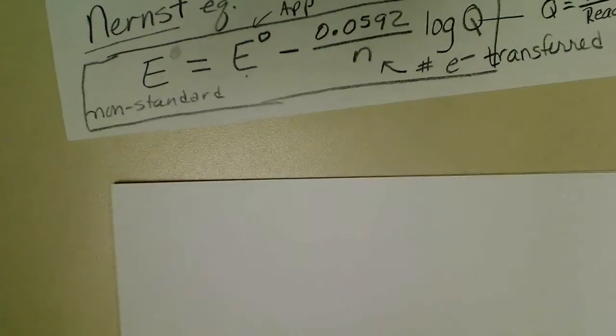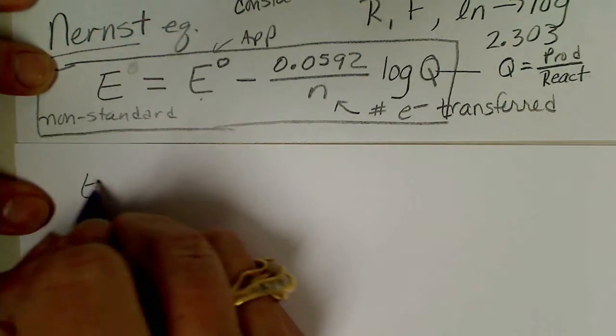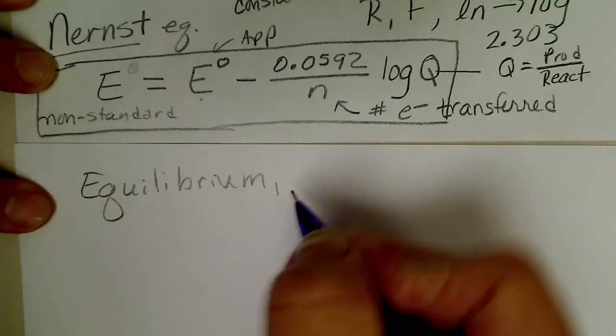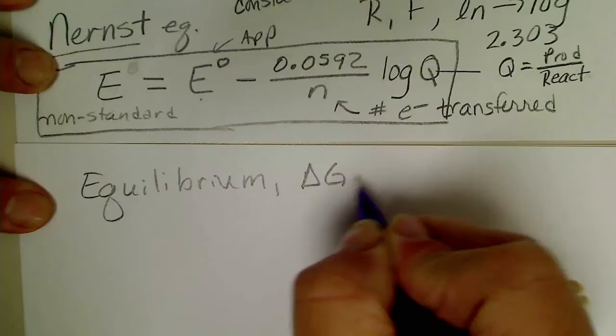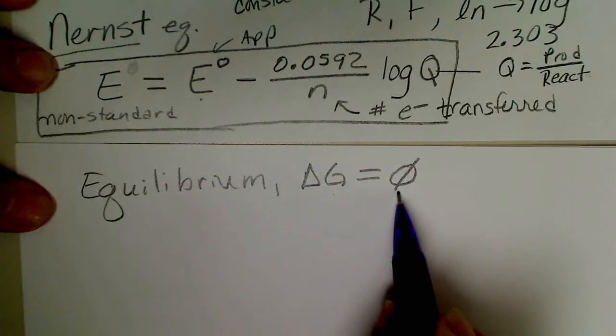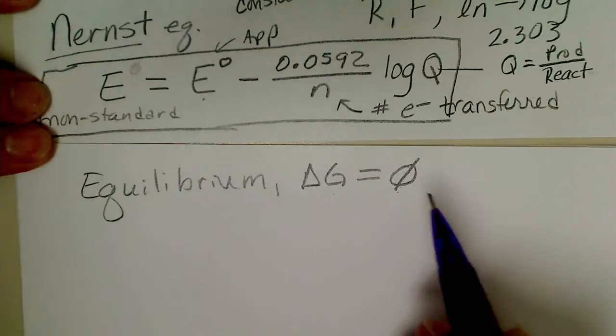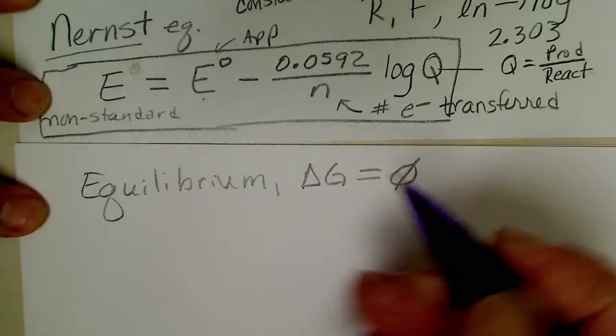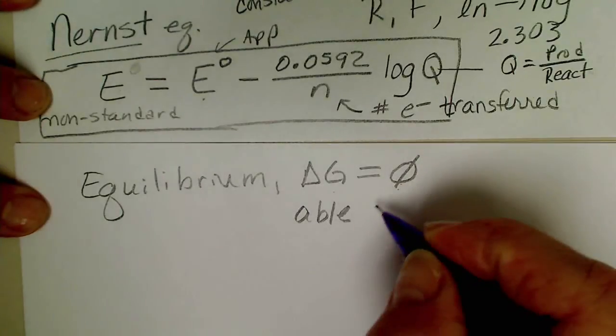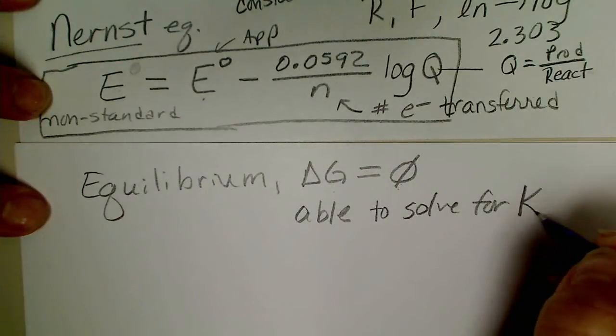If our cell is at equilibrium, basically that means a dead battery. So at equilibrium remember that delta G, Gibbs free energy, was equal to zero, so that means the reaction would not be spontaneous in the forward or the reverse direction. And when we use the non-standard conditions we were able to solve for the equilibrium constant.